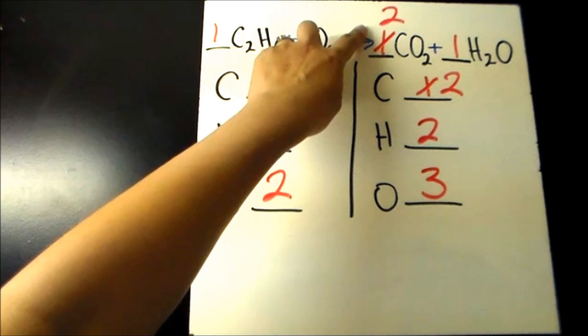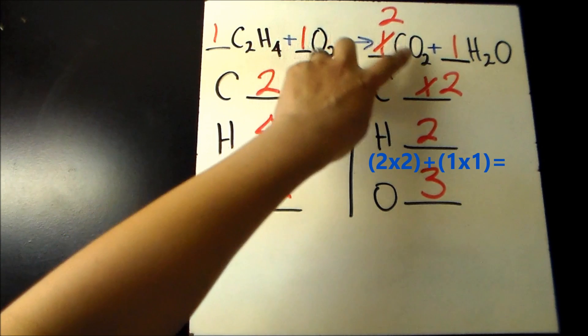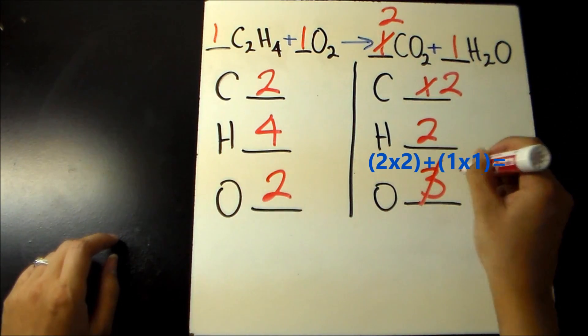Coefficients applied to the entire compound, so the 2 before CO2 also changes the number of oxygens to 4, and with 1 oxygen here, this gives a total of 5.